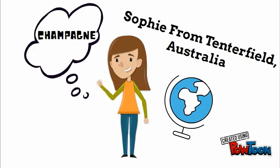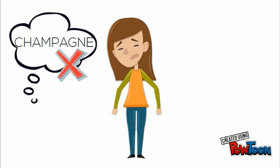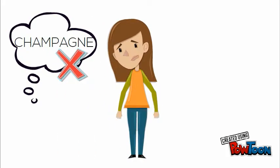This is Sophie. Sophie owns a vineyard in Tenefield, Australia. She has recently developed a new blend of sparkling wine and wishes to label it Champagne. Champagne is a type of sparkling wine produced from grapes grown in the Champagne region of France. An application for opposition of Sophie's sparkling wine to be named Champagne will likely be successful on the grounds that it contains a false geographic indication likely to deceive or cause confusion.